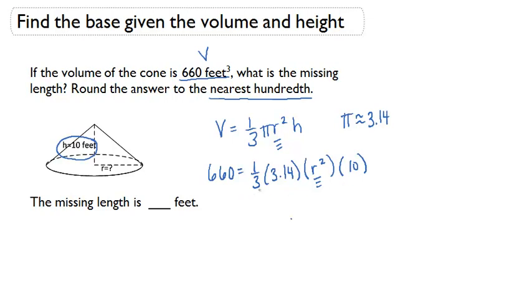So if I multiply one third by 3.14 by 10 and then divide it by 660, I get 63.06 equals the radius squared.